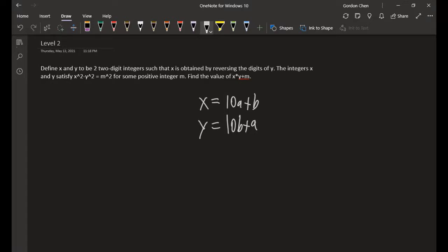We want to find m squared. And if we factorize x squared minus y squared, we get x minus y times x plus y.